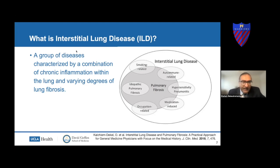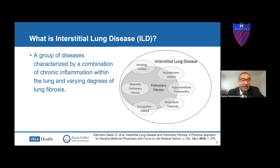This diagram illustrates ILD as a broad umbrella covering everything. Within that spectrum, there is a population of pulmonary fibrosis, which includes smoking-related ILDs, autoimmune-related ILDs, hypersensitivity pneumonitis, medication-induced ILDs, occupation- or exposure-related ILDs, and the most common being IPF and other idiopathic pneumonias.